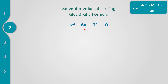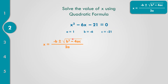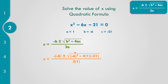Another example: X squared minus 6X minus 21 equals 0. The given is written in standard form, so we can identify A, B, and C. The value of A is the numerical coefficient of X squared, that is 1. The value of B equals negative 6, and the constant C equals negative 21.